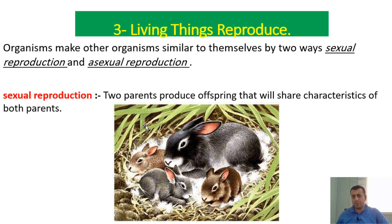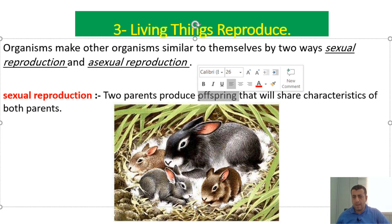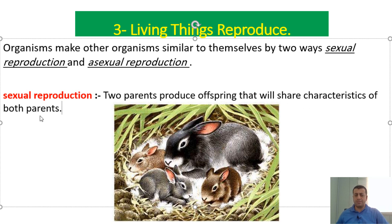There are two types of reproduction: sexual reproduction and asexual reproduction. In sexual reproduction, two parents — male and female — produce offspring. That means two parents produce kids. Offspring means babies or kids. The offspring will share characteristics of both parents. For example, a human being gets properties from both mother and father.